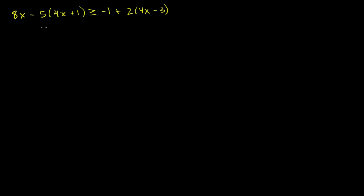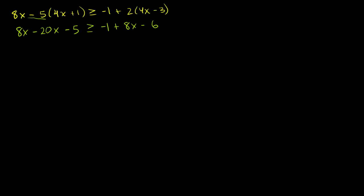This might seem daunting, but if we simplify it step by step, it's no harder than the other problems. Let's distribute the negative 5: we get 8x, then negative 5 times 4x is negative 20x, and negative 5 times 1 is negative 5. On the right-hand side, negative 1 plus 2 times 4x is 8x, and 2 times negative 3 is negative 6. Merging terms: 8x minus 20x is negative 12x, minus 5, is greater than or equal to...